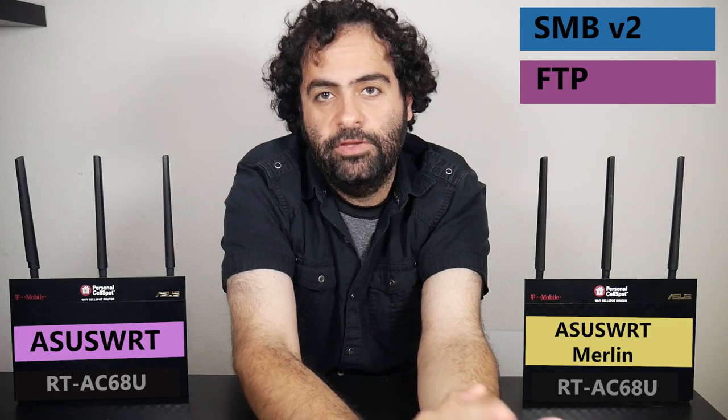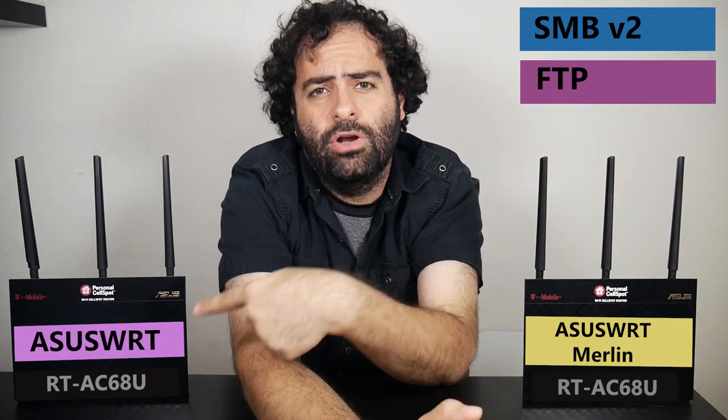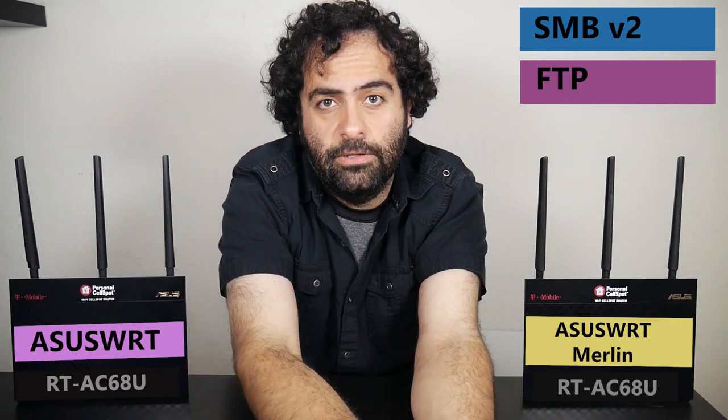Number three and four are again related to each other: SMB version 2 and FTP. I can use them to share a USB hard disk drive that I have connected to the router. The problem is that Asus WRT unfortunately only supports SMB version 1, which is old and not secure. Because of that, Windows 10 devices no longer have it enabled by default. I prefer to use at least SMB version 2, which Merlin supports.